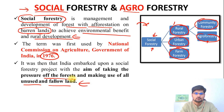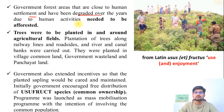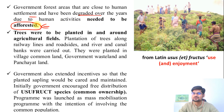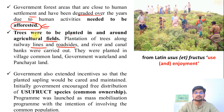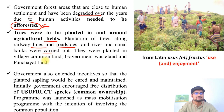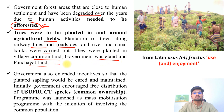Government forest areas that are close to human settlements and have been degraded over years, not used for any human activity, needed to be afforested — that was the reason behind social forestry. Trees were to be planted in and around agricultural fields, along railway lines and road sides, and river and canal banks were also covered. These were planted in accordance with government plans as well as community understanding of common land, and government wasteland and panchayat land were converted into forests by community plantation.